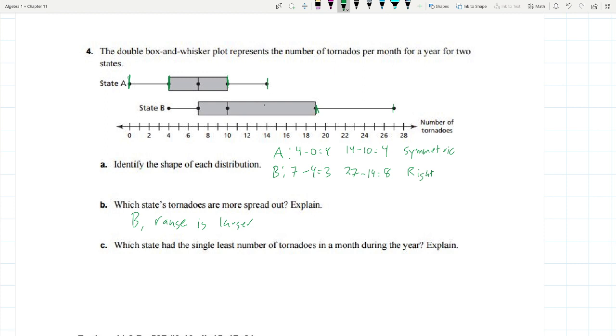Which state had the single least number of tornadoes in a month during the year? Explain. Well, the answer to that is A. Because A, the smallest data point is 0. Because we actually had a result of 0. In order to have a whisker that goes out to 0, we had to have a result of 0.